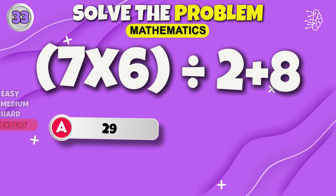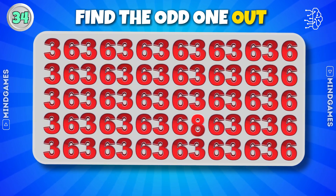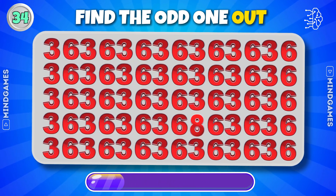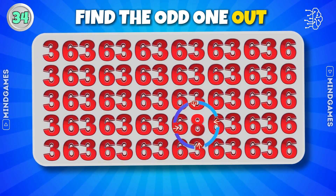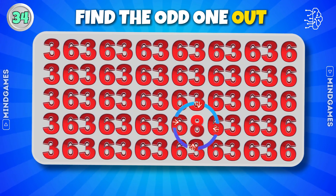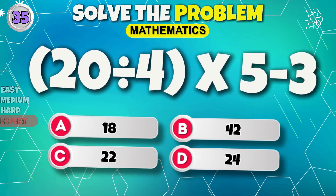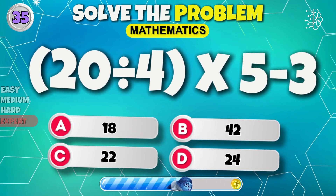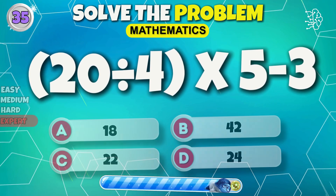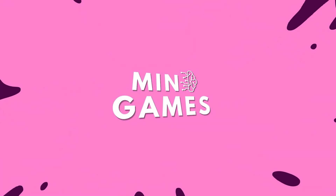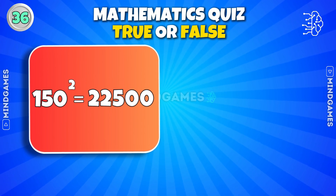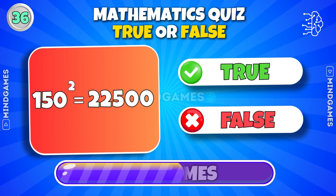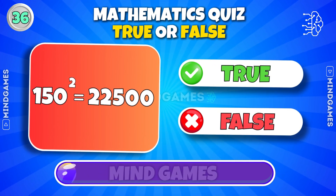29. Find the odd one out. There you go. Next round. It's 22. Square of 150 is 22,500 — true or false? It's true.